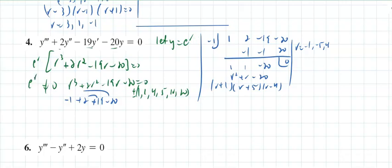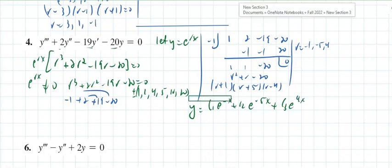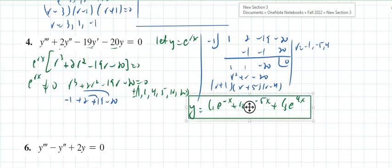The textbook wants the answer in terms of x, but t and x are interchangeable here. So y equals c₁e^(negative x) plus c₂e^(negative 5x) plus c₃e^(4x). We'll keep it in terms of x since that's what they want.